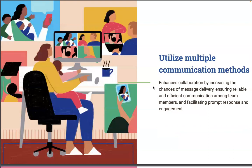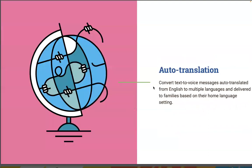It enhances collaboration by increasing the chances of message delivery, ensuring reliable and efficient communication among team members and facilitating prompt response and engagement. Text-to-phone messages are auto-translated from English to multiple languages and delivered to families based on their home language setting. Communicating to families in their home language is a really exciting feature.